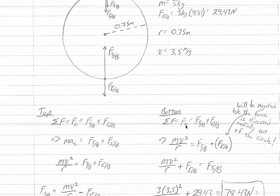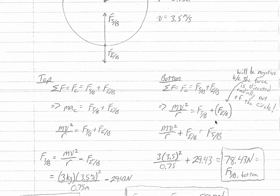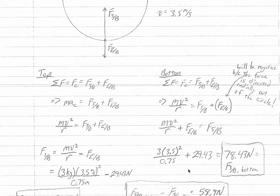Moving on to the bottom, we have the same centripetal force equation with the same two forces acting. We again have mv squared over r equals force of the string on the bucket plus force of the earth on the bucket — in parentheses, because we're going to make this negative. Solving, we get the force of the string equals mv squared over r plus the force of the earth. Crunching the numbers, the force of the string on the bucket at the bottom of the circle is 78.43 newtons.